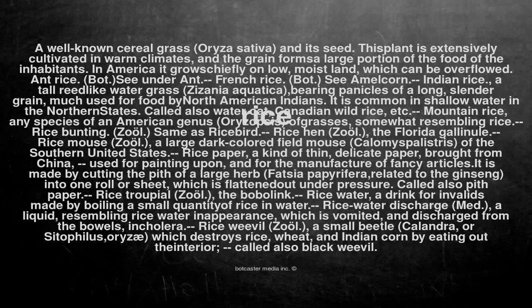Rice. A well-known cereal grass, Oriza sativa, and its seed. This plant is extensively cultivated in warm climates, and the grain forms a large portion of the food of the inhabitants. In America it grows chiefly on low, moist land, which can be overflowed.